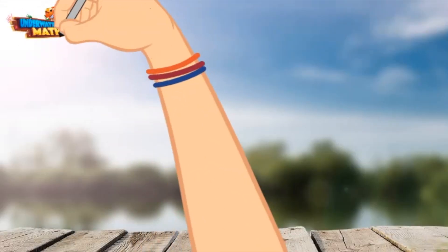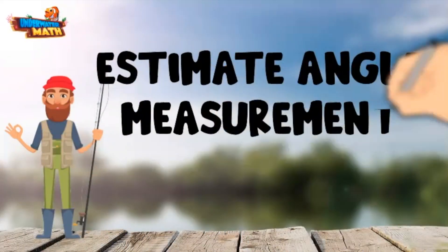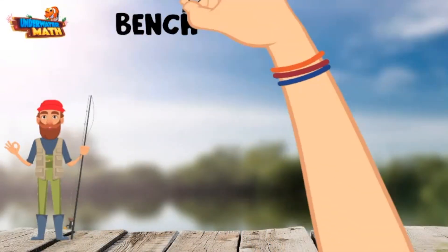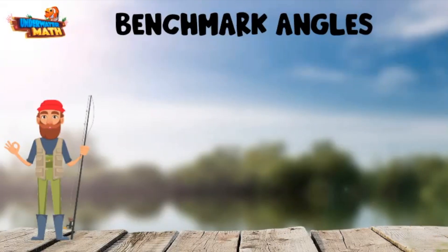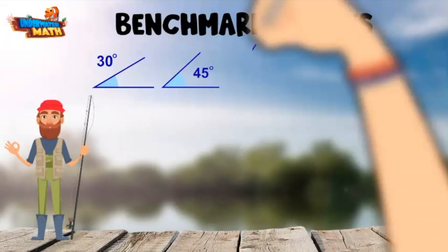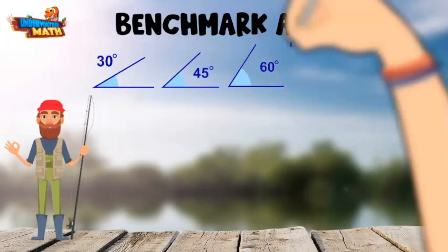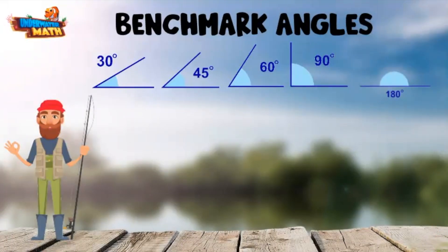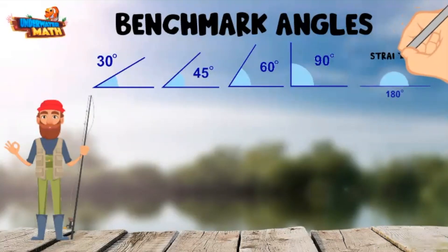Hey friends, I'm Fisherman Haunts and we are going to learn how to estimate angles today. First it's helpful to know our benchmark angles. These angles measure 30 degrees, 45 degrees, 60 degrees, 90 degrees, and 180 degrees. Knowing what these angles look like helps us estimate the size of other angles. Remember, a 180 degree angle is just a straight line and a 90 degree angle looks like a corner in a square.